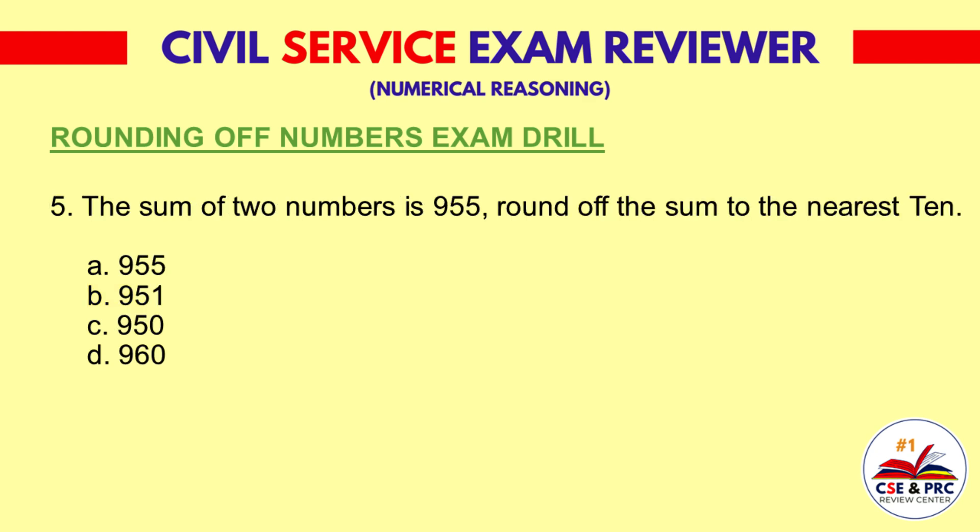Question 5: The sum of two numbers is 955. Round off the sum to the nearest ten. A. 955, B. 951, C. 950, D. 960. The answer is D: 960.